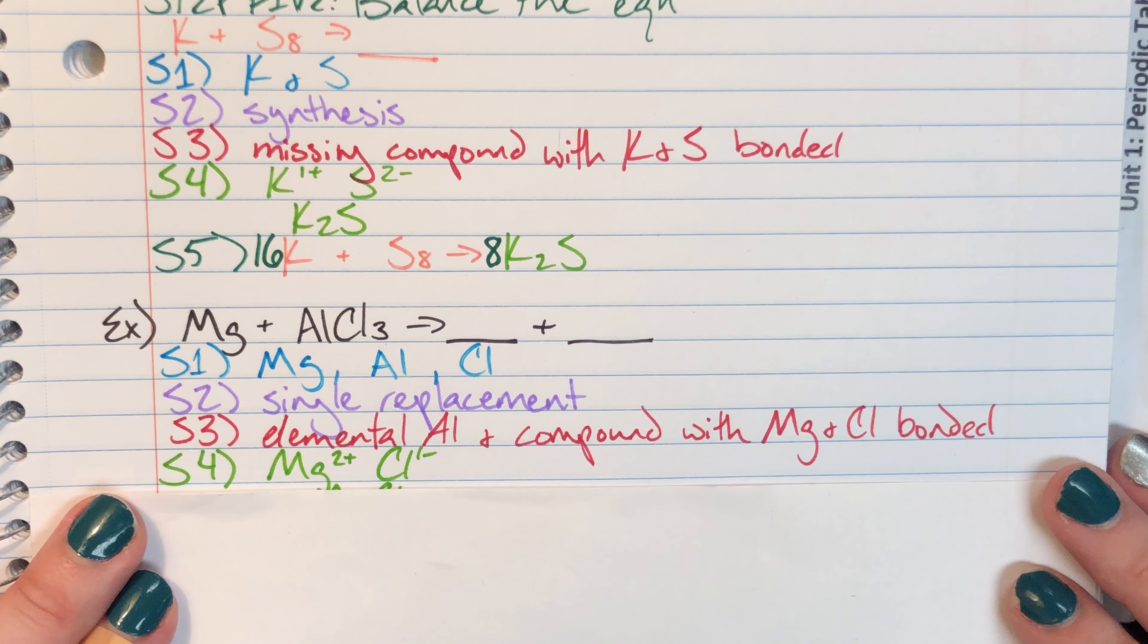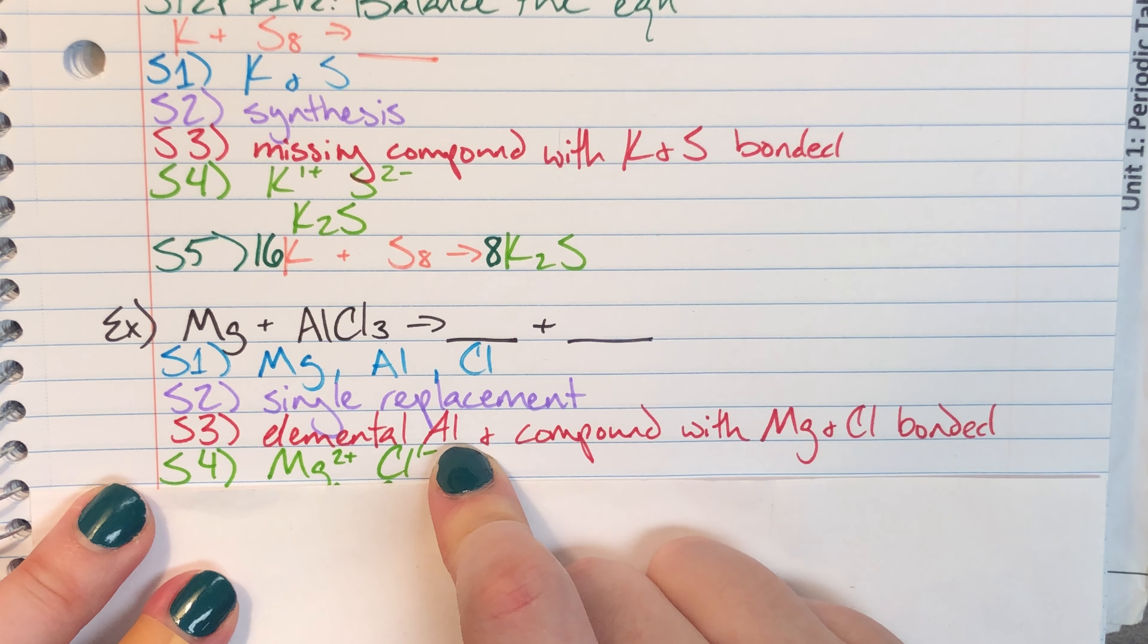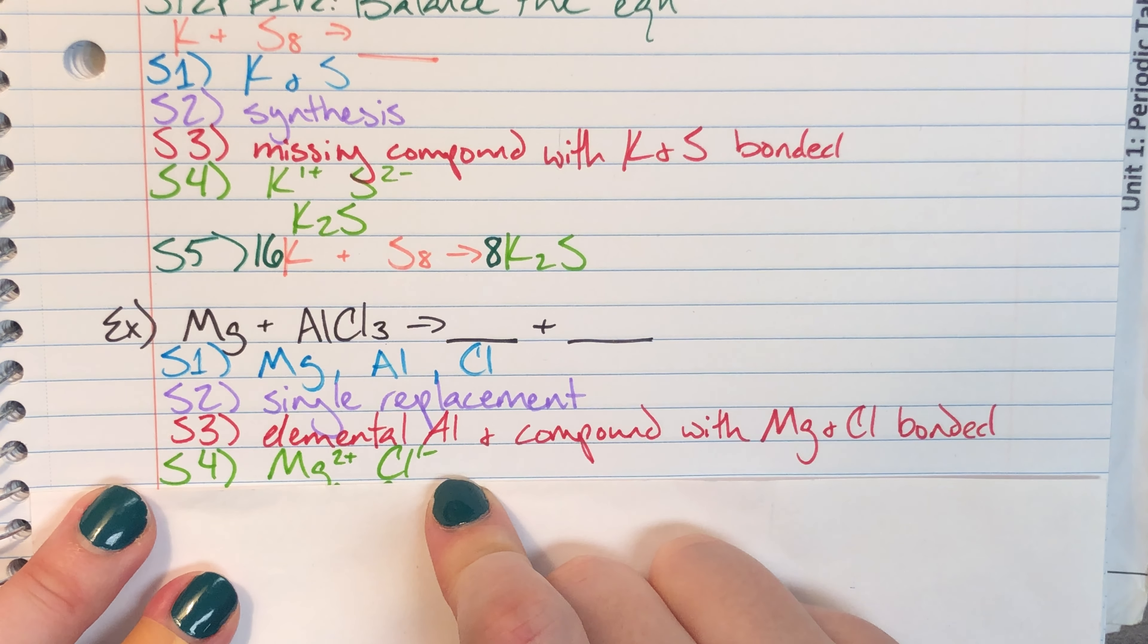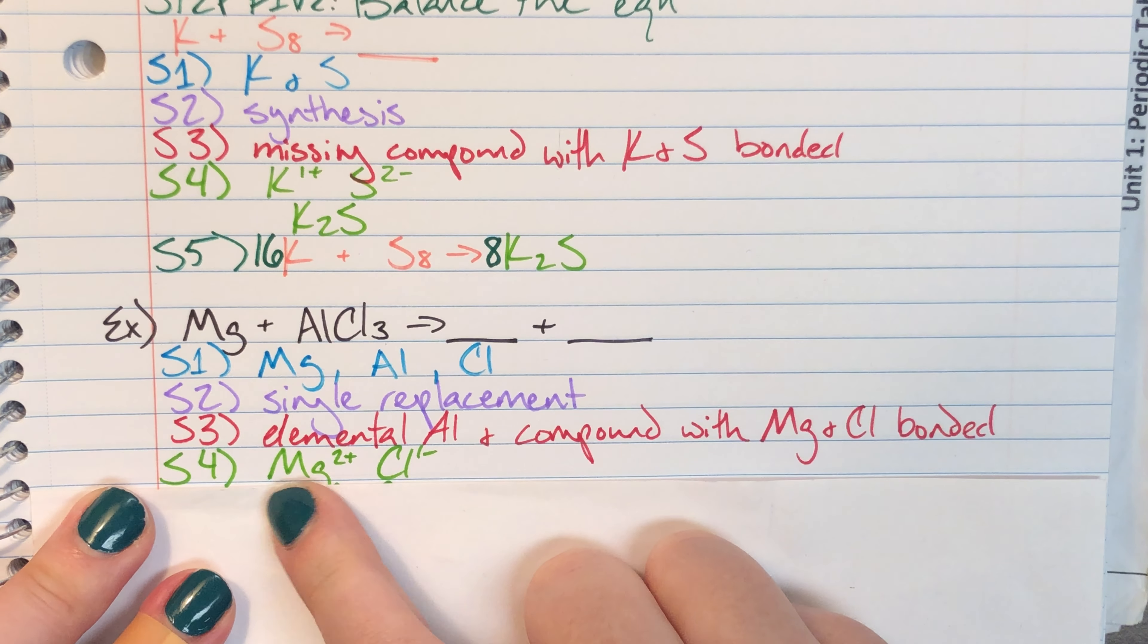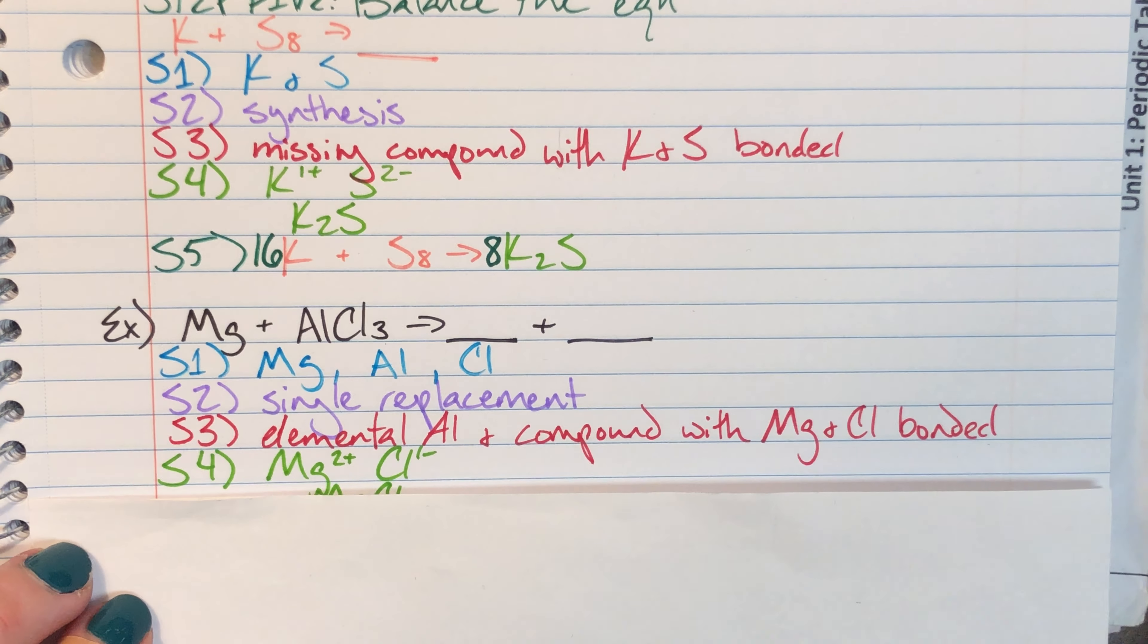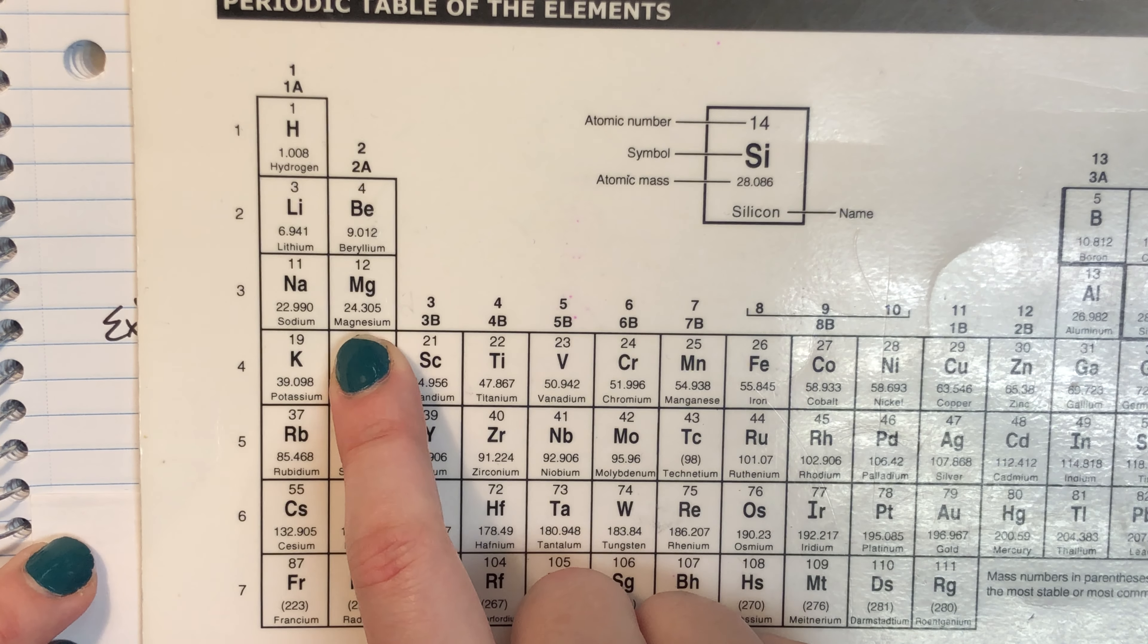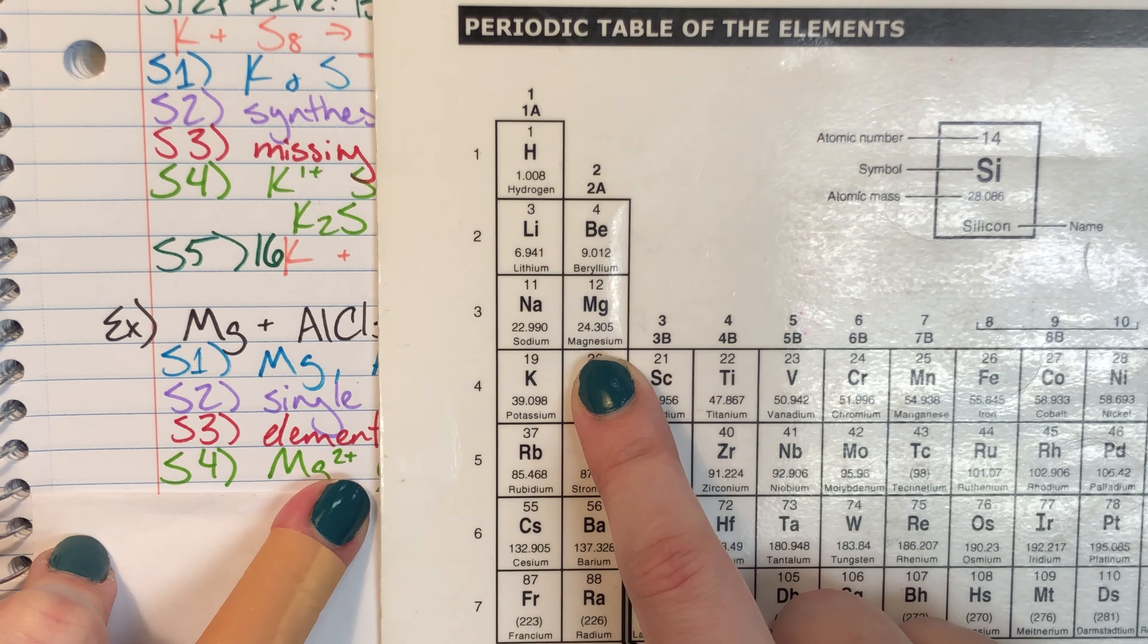And then I can go ahead and start working that out. Since aluminum is just elemental aluminum, I don't need to worry about finding the compound formula. So I just went ahead and started with the magnesium and the chlorine. So magnesium metal is in column two which means it has two valence electrons, so it's gonna have a positive two charge.